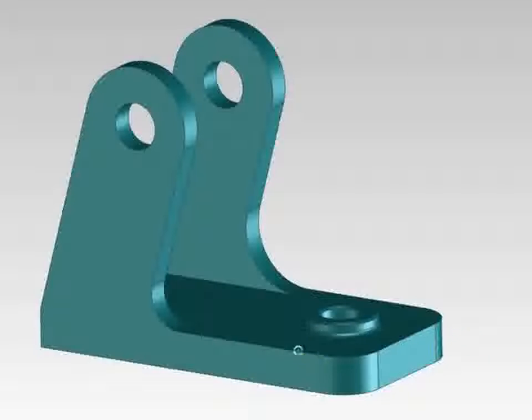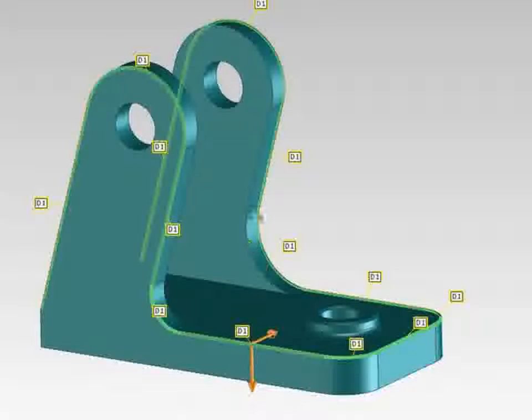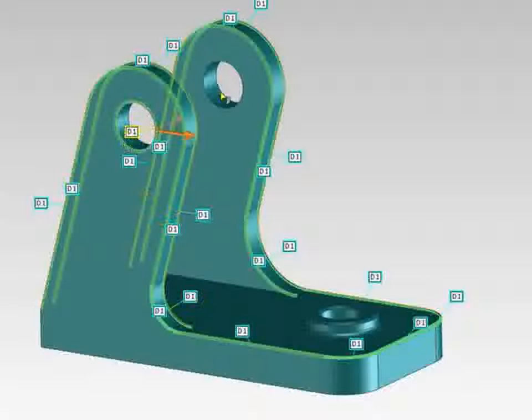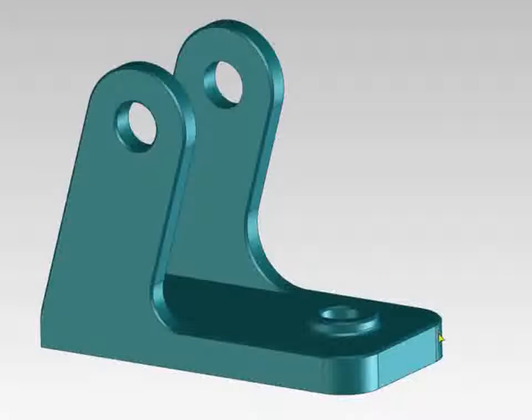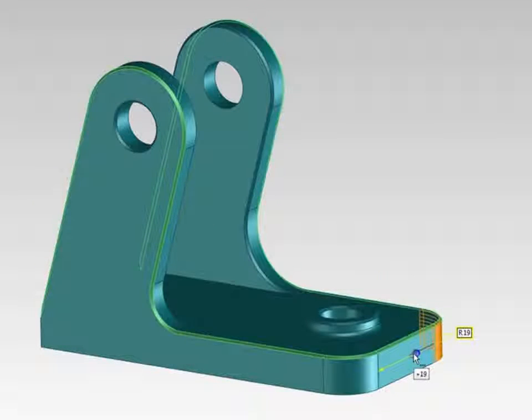For example, if I select an edge, the commands to create a blend or a chamfer are displayed. If I select a blend, I can change the radius or see other options related to the blend.